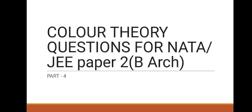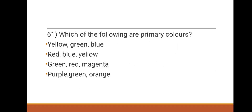Hi all, this is the fourth part of our architectural awareness questions. Today we are covering color theory. We have already completed 60 questions in previous three videos, so we are continuing with question number 61: which of the following are primary colors? Options: yellow green blue red, blue yellow green red, magenta purple green orange.